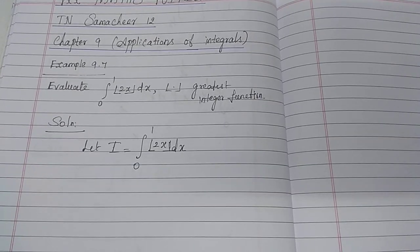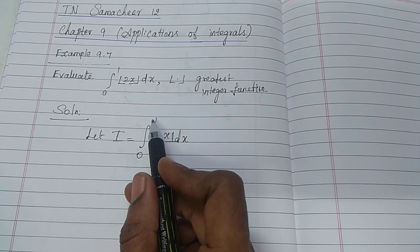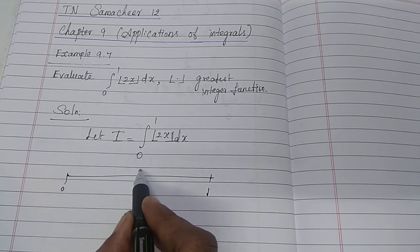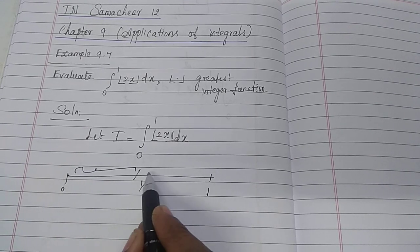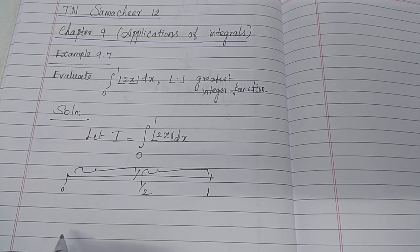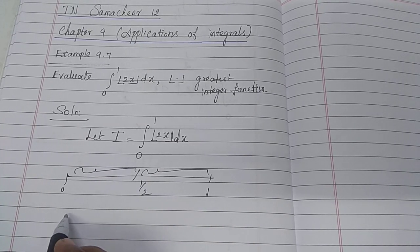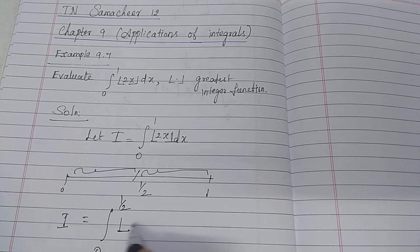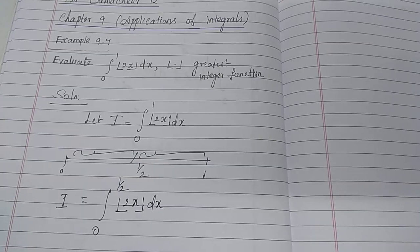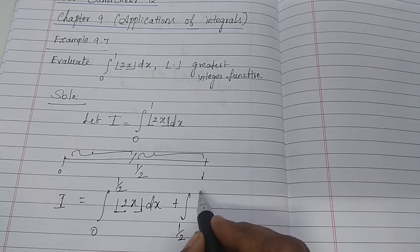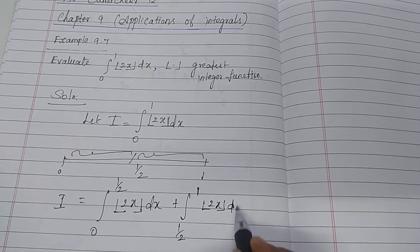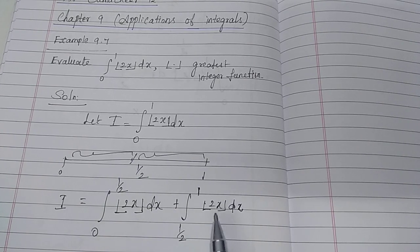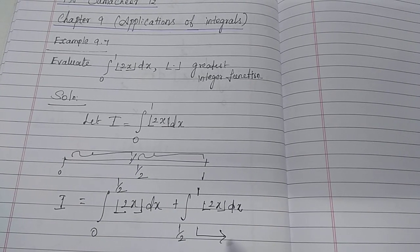Now split the given interval 0 to 1 into 2 sub-intervals by taking the midpoint 1/2. Therefore we get 2 intervals. We can write I as the integral from 0 to 1/2 of [2x] dx plus the integral from 1/2 to 1 of [2x] dx. Call this equation 1.